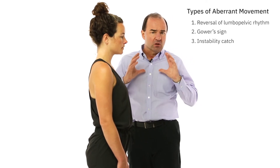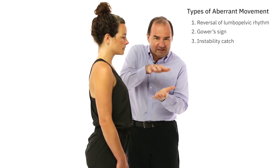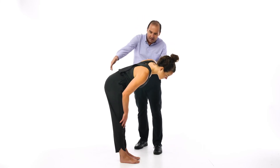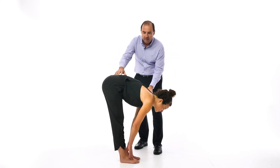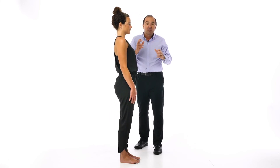Third is the instability catch. This is when she goes down to touch her toes but there's one place in the movement where it's not smooth and she works around that problem. You see a little lateral deviation on the way down, and you may see it on the way up as well. Lateral deviation either on the way down or on the way back up — it doesn't have to be both, often it is — would be another positive aberrant movement.